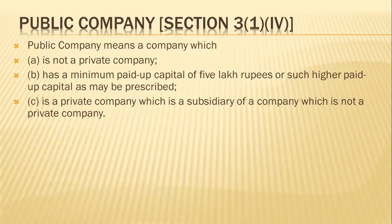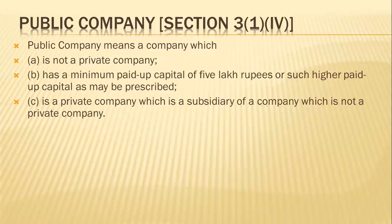First, let us understand public companies. Apart from the meaning given on the screen, a public company means a company which is not a private company. There must be at least seven persons to form a public company. However, there is no maximum limit as to its number of shareholders or members. It is the essence of a public company that its articles do not contain provisions restricting the number of its members or excluding the transfer of its shares to the public.